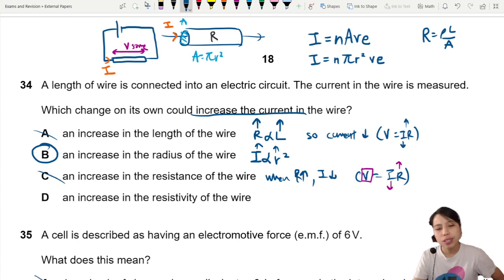D. Increased resistivity of wire. R is proportional to resistivity. So same similar story. If you increase resistivity, you increase resistance. So current decrease.